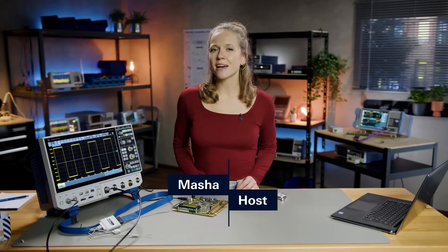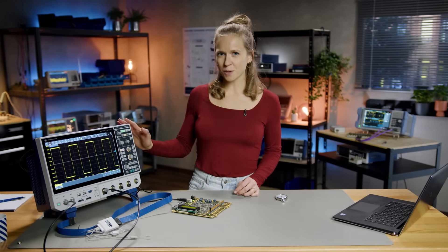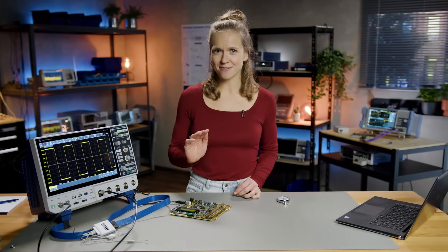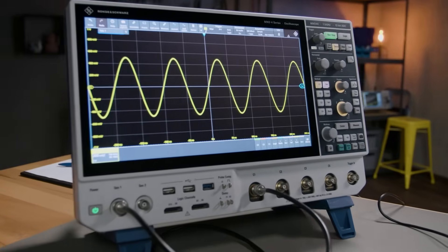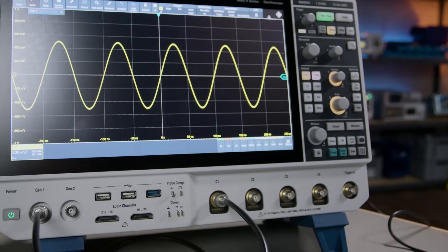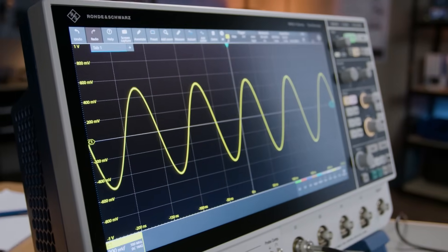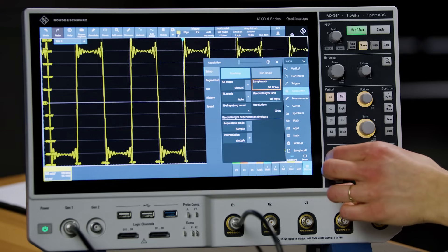My name is Masha, and today I will show you how to use an oscilloscope, and what you need to pay attention to in order to measure accurately. Oscilloscopes are widely used in electrical design, testing, and troubleshooting. Most modern oscilloscopes not only display signal voltages over time, but have many additional analysis functions.